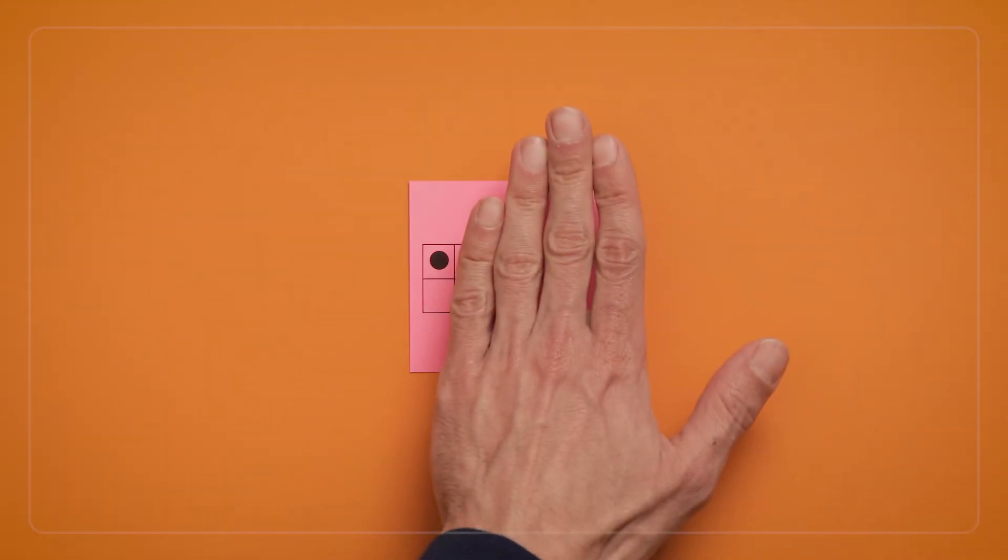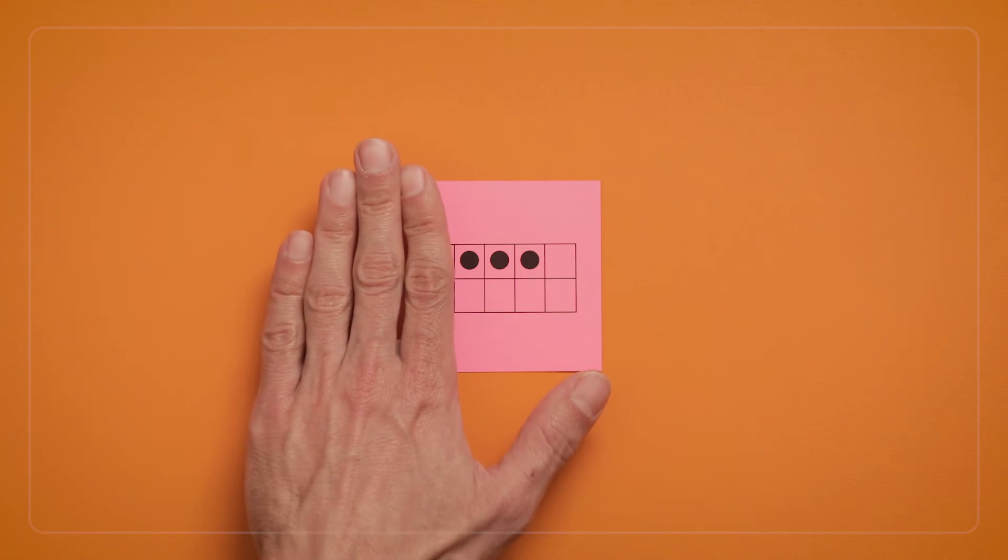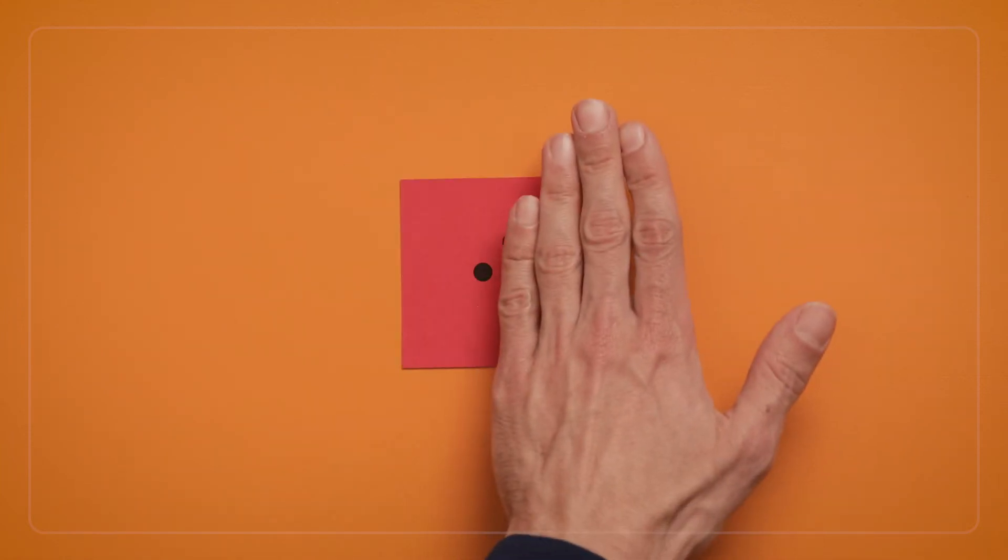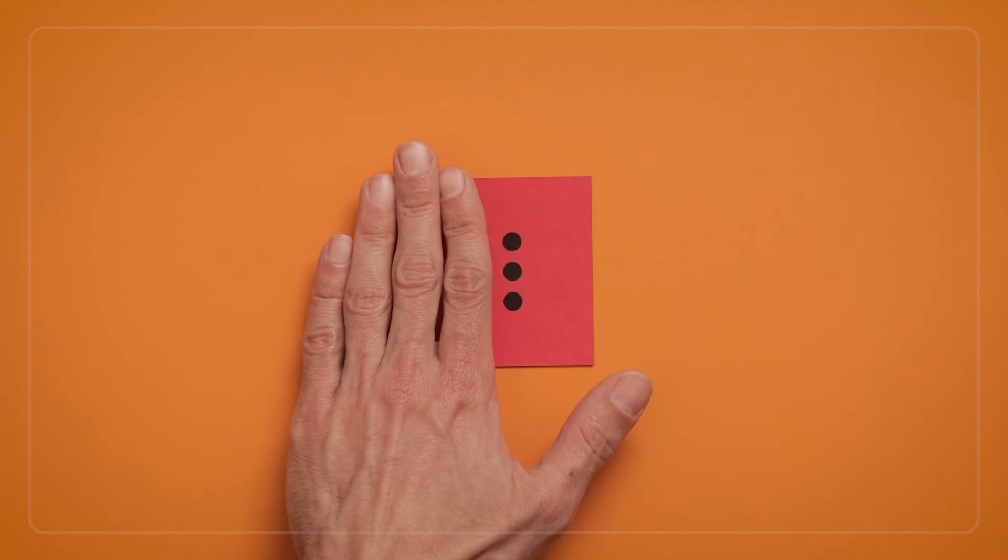Preschoolers can recognize that smaller numbers are hiding inside larger numbers. For example, how 1 and 3 are hiding inside 4.